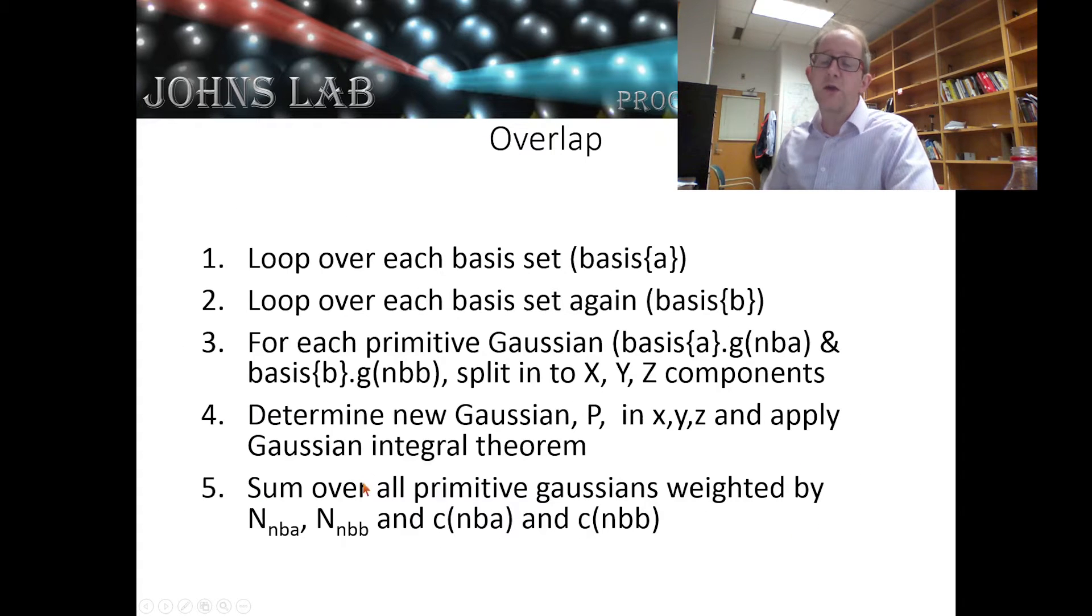To calculate the overlap matrix, we loop over each basis set, each function in the basis set. Then we loop over each function in the basis set a second time. At this point, in my two for loops, I'll have basis function a and basis function b.